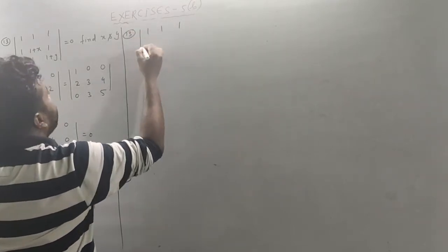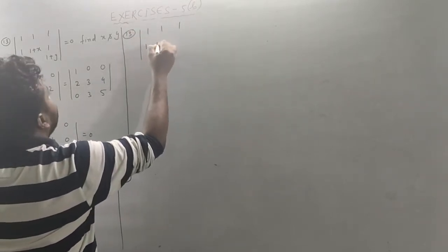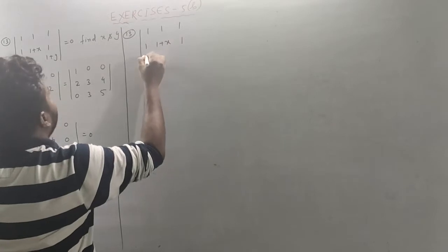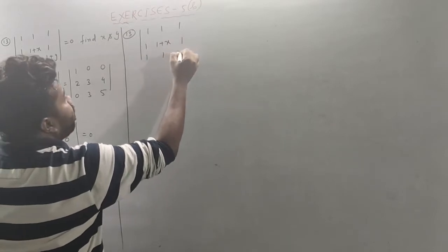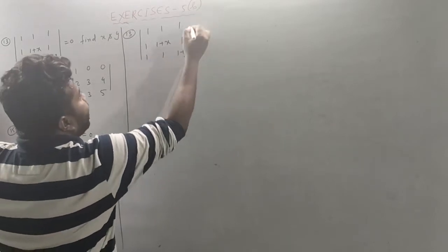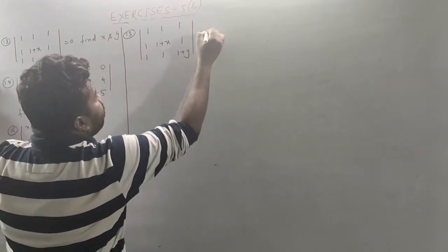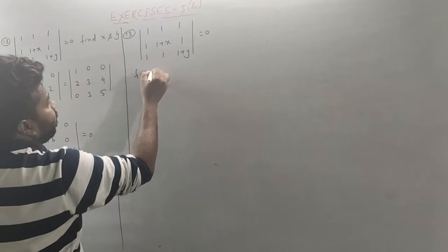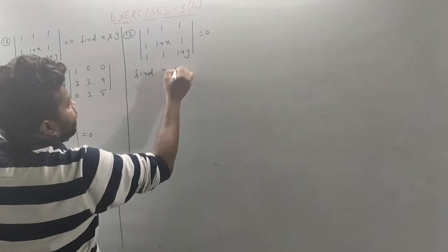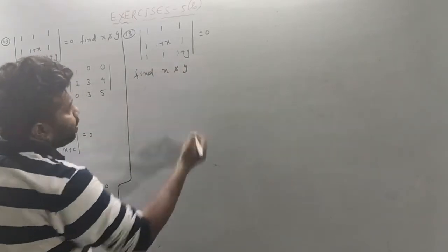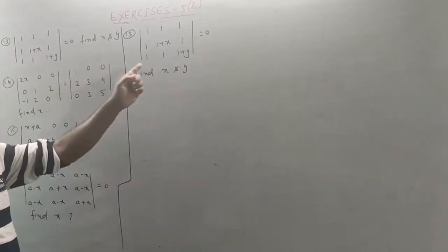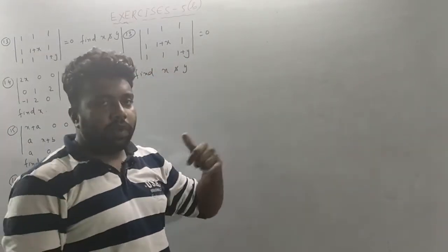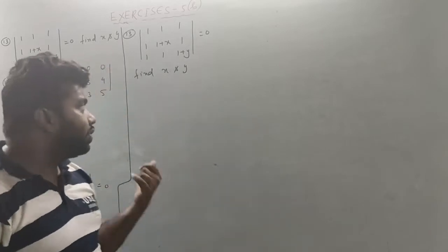1 plus x, 1, 1, 1, y plus y is equal to 0. Find x and y. This matrix is equal to 0, then find the x value and y value. So let's start.